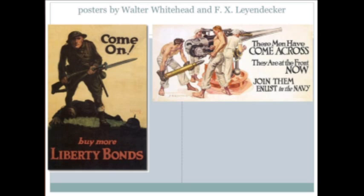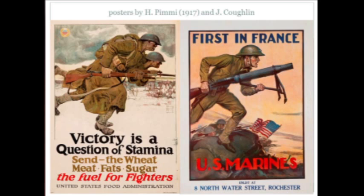One poster says 'Enlist at 8 North Water Street, Rochester.' We discovered that the posters were either partly printed centrally in Washington and sent to different cities with local enlistment codas added at the bottom — sometimes as a separate piece of paper. Many of the posters in the gallery have Rochester addresses because they came from the Rochester Historical Society, which was given all the leftover posters because the war ended before people had expected.